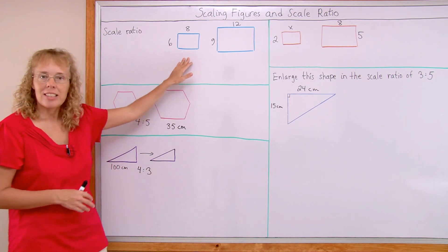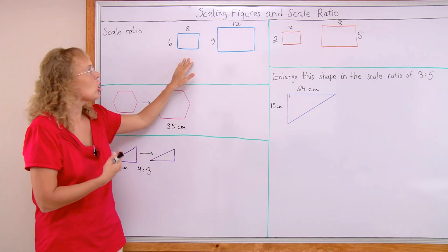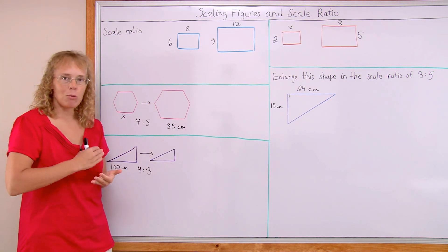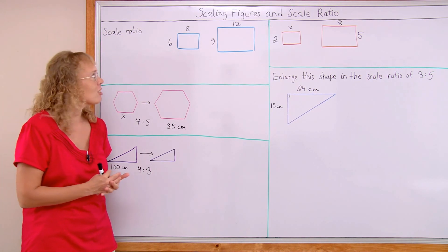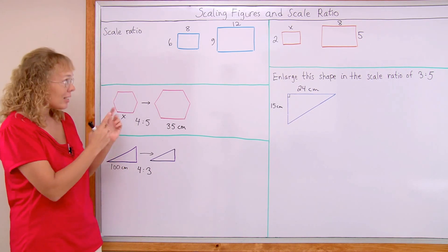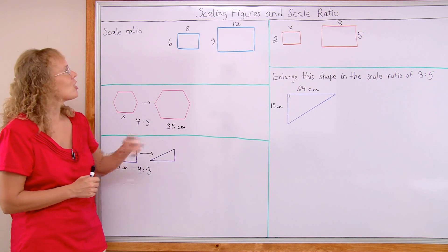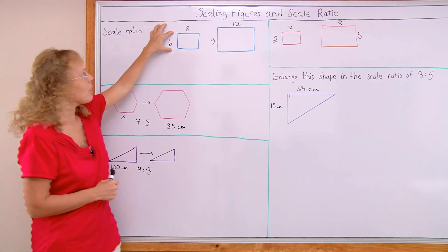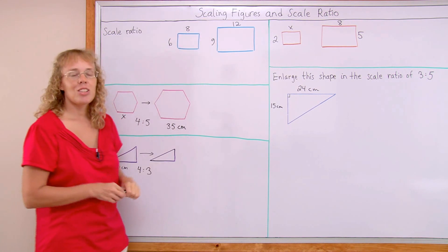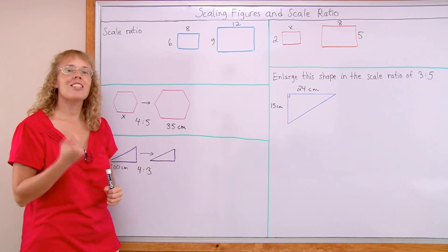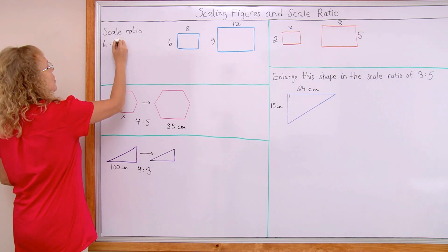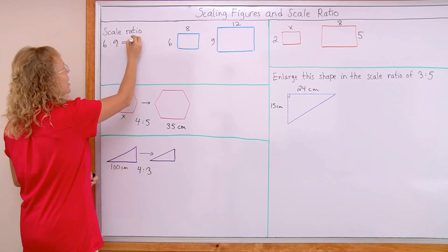Now, here it is like this rectangle got enlarged and we can talk about the scale ratio. In what ratio did it get enlarged? We can get the scale ratio from the side lengths. We look at this side, 6 became 9. And so the ratio 6 to 9 is the scale ratio. Of course it simplifies to 2 to 3.